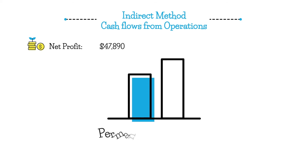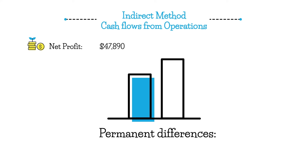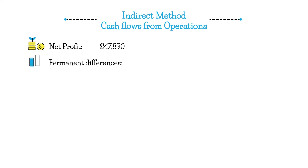Next, the section we're going to do is permanent differences. These are differences that will never result in a cash flow — they are essentially accrual adjustments. The types of permanent differences include things like depreciation and gains and losses on the sale of non-current assets.